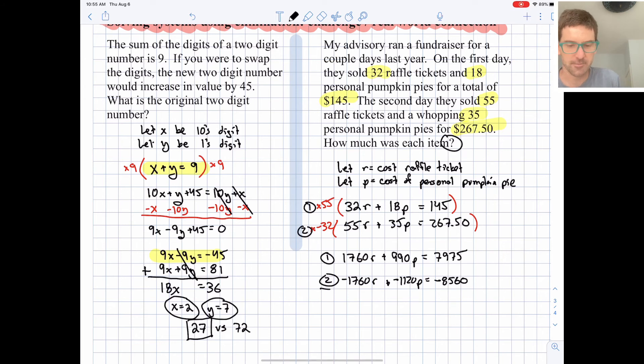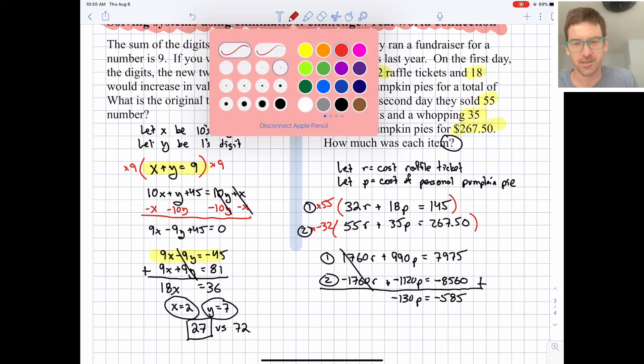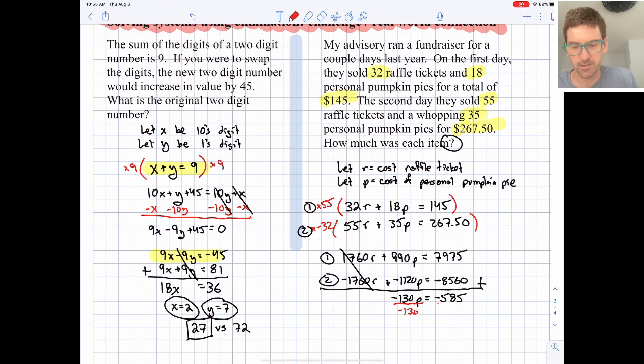So let's add them together right now. We'll eliminate the r's, and hopefully we'll get closer to an answer here. So the p terms turn into a negative 130p equals negative 585. Okay, I think we're getting close. We can go ahead and divide by this negative 130 on both sides. And we end up with a p is equal to 4.5, so $4.50.